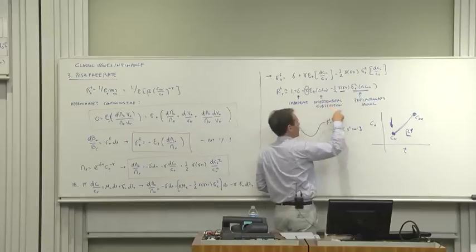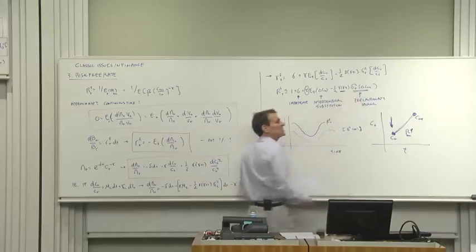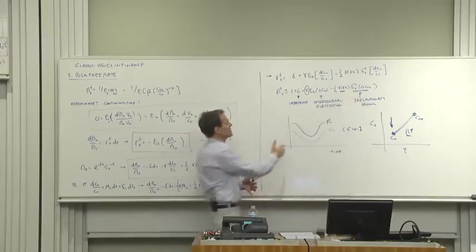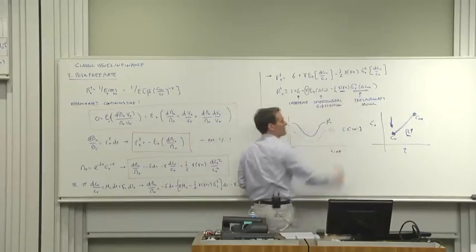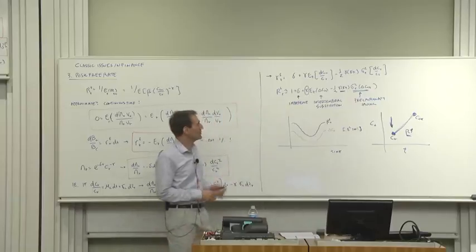Variance too. If you go through a period of great uncertainty like the one we've just been through, that predicts that interest rates will be low as well. So this theory captures the main features of what we see in the data even though it's very simple.